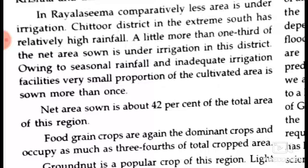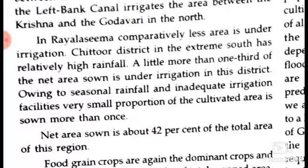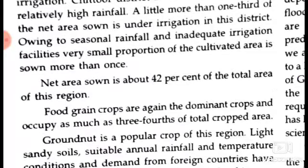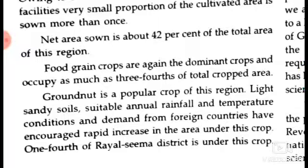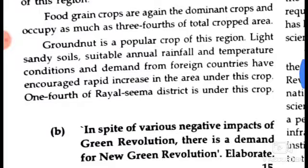A very small proportion of the cultivated area is sown more than once; the net area sown is about 42 percent of the total area of this region. Food grain crops are the dominant crops, accounting for about three-fourths of the rural crop. Groundnut is a popular crop of this region. Suitable soil, favorable temperature conditions, and demand from foreign countries have encouraged a rapid increase in the area under groundnut. One-fourth of Rayalaseema district is under this crop.